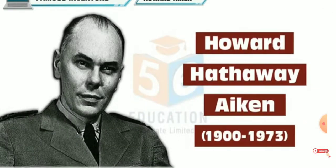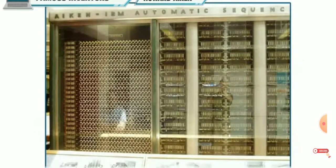Howard Hathaway Aiken was an American physicist and a pioneer in computing. He was born on March 8, 1900 in Hoboken, New Jersey. He was the primary engineer behind IBM's Harvard Mark I computer.